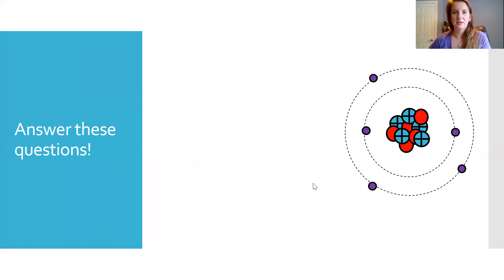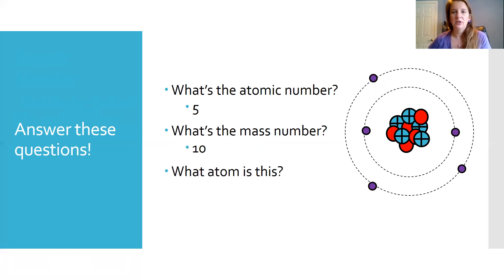So let's take a look at some of these questions here. Looking at this element or this atom over here, what's the atomic number? Again, for the atomic number, we count the number of protons. So we have one, two, three, four, five. So that means the atomic number is five. What's the mass number? We add the protons and the neutrons together. So we have one, two, three, four, five neutrons. So the mass number would be 10. What atom is this? We look at the number of protons or the atomic number to tell us what atom it is. So this is boron.